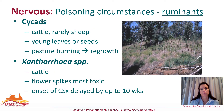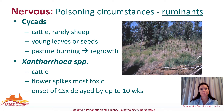The toxin in cycads responsible for zamia staggers is unidentified, although it is suspected to be a derivative of MAM produced by microbial enzymes. The plant parts that contain the highest concentrations of MAM, mainly the young leaves and seeds, are also the most likely to be associated with the nervous syndrome. The reason for some animals succumbing to acute liver necrosis and others to staggers may simply be a matter of dose. Consumption of the flower spikes of grass trees is considered the greatest risk of causing wamps in cattle, with the onset of clinical disease seen up to 10 weeks after ingestion of a toxic dose.